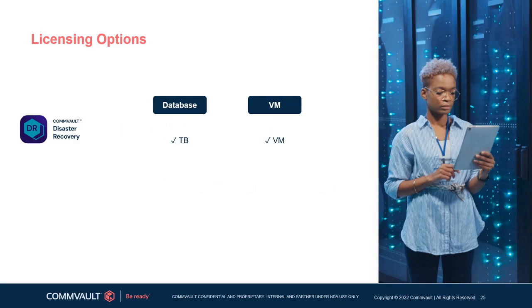Commvault Disaster Recovery is easy to scope, price, and deploy. For database replication, licensing is by the amount of data being replicated through DR, while VMs are licensed by the number of VMs being replicated. Licensing can be sold as a subset of the enterprise package where it makes sense, while service providers can receive the benefit of utility billing based on monthly high watermark usage. These options make it easy for any customer to buy and use.